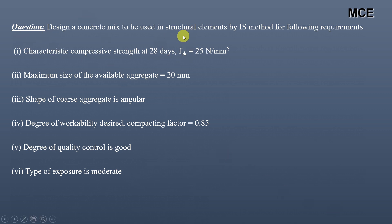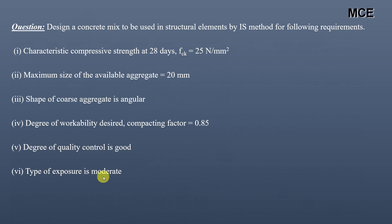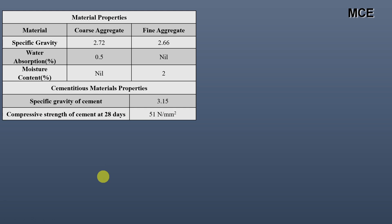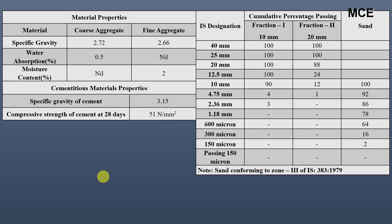We have been given a question to design a concrete mix to be used in structural elements by the IS method, with the following requirements: characteristic compressive strength at 28 days should be 25 MPa, maximum size of available aggregate is 20 mm, shape of coarse aggregate is angular, compacting factor is 0.85, degree of quality control is good, and type of exposure is moderate.